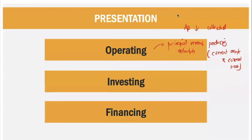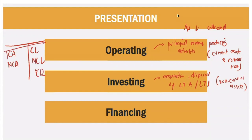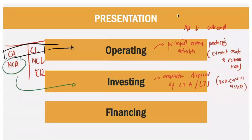For Investing Activity, this talks about your Acquisition and Disposal of Long-Term Assets or Long-Term Investments. So if ever you have Long-Term Assets or Long-Term Investments and you have cash coming from those, it is considered Investing. Therefore, this is more of your Non-Current Assets. Any items which affect your Non-Current Assets as to cash is considered Investing. So in our T-Account, we have Current Asset, Non-Current Asset, Current Liability, Non-Current Liability, and Equity. Current Asset and Current Liability is for your Operating, and Non-Current Asset is considered Investing.